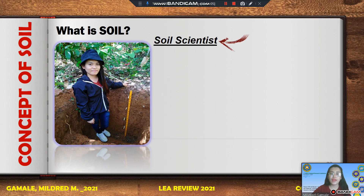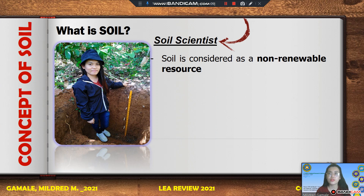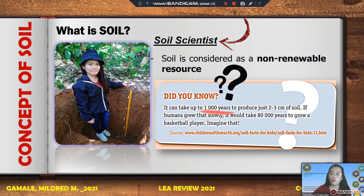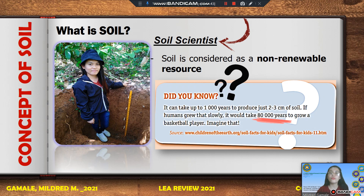Soil is also defined as a non-renewable resource — a natural resource that cannot be easily replenished or replaced by natural means. Why is soil considered non-renewable? It can take up to 1,000 years to produce just 2 to 3 centimeters of soil. Although often undervalued, soil is actually critical for life. Therefore, we must take good care of our soil, since it is especially vulnerable to degradation and can disappear in seconds.